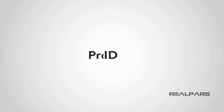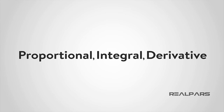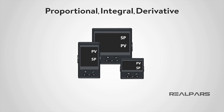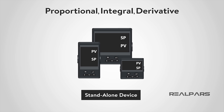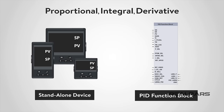PID is an acronym for proportional, integral, and derivative. A PID controller is a device that is used to control a process. The controller can be a physical standalone device or a control block found in a PLC function database. The PID portion of the controller is a series of numbers that are used as adjustments in order to achieve your objective.